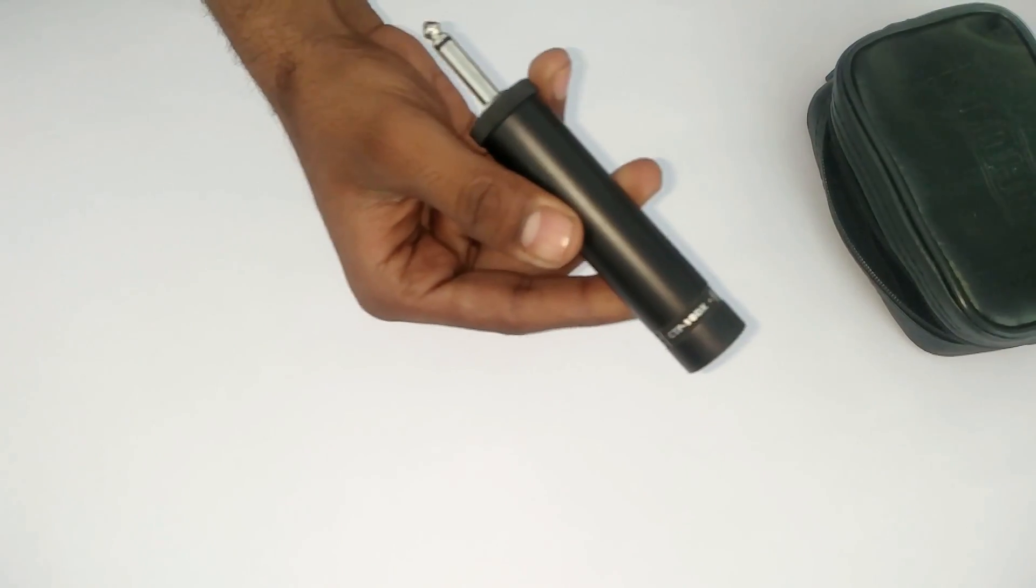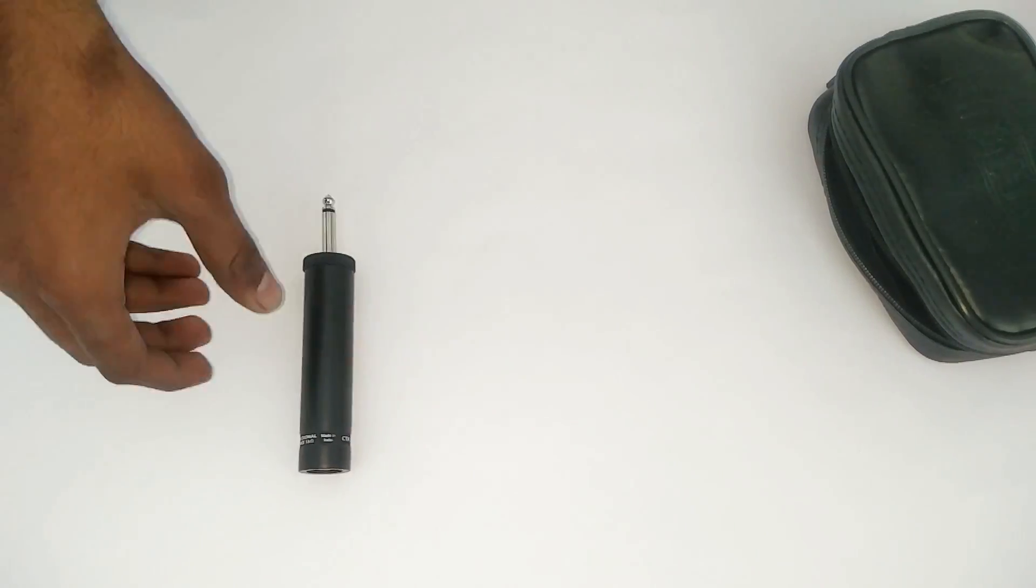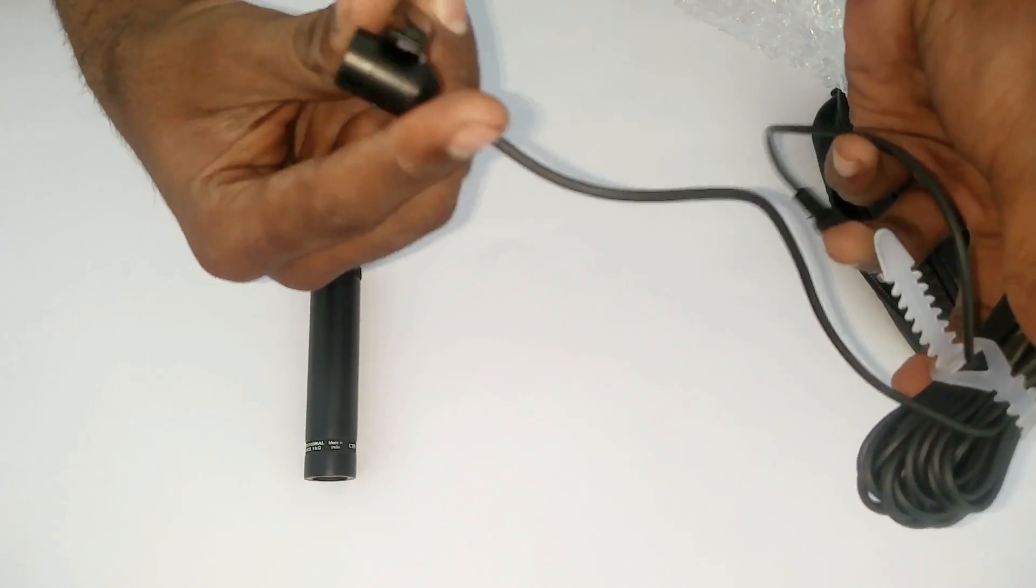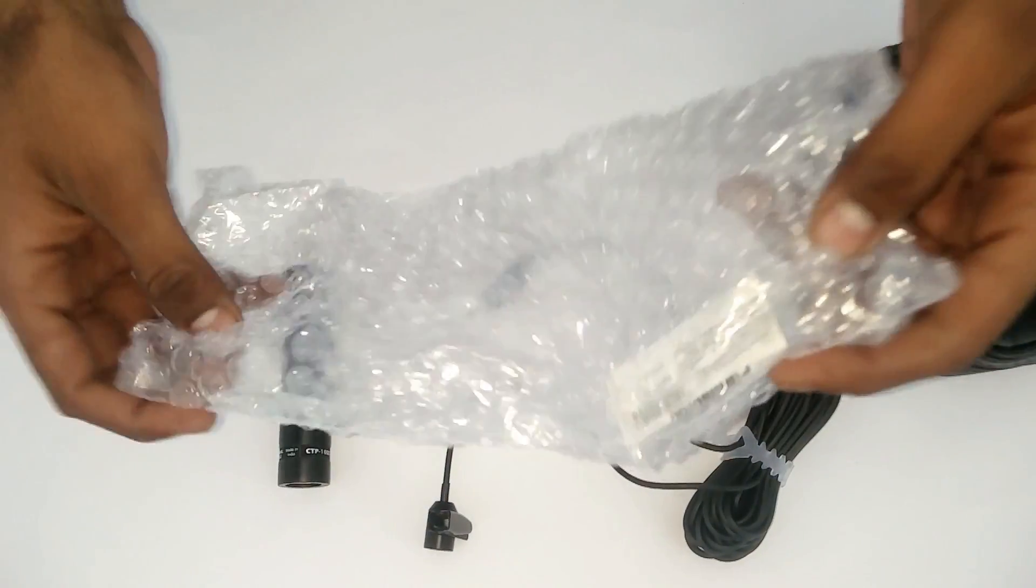The first thing in the box is the connector to connect your microphone to the amplifier. The next thing is the mic itself with a long 6-meter cable. And lastly, you have an AA battery.